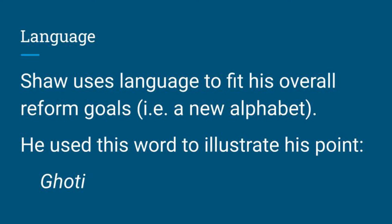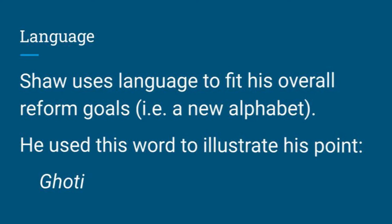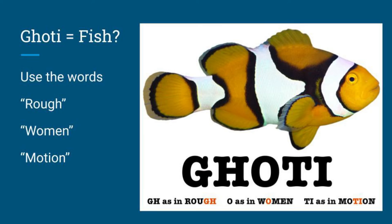Nothing better illustrates — this is a famous trick from Shaw — but nothing better illustrates his point with language than this word down here: G-H-O-T-I. Anyone got an idea how to say that? How about fish? Using the G-H from 'rough,' the O from 'women,' and the T-I from 'motion,' you can get fish. Shaw's using this to show just how complex and difficult English pronunciation is, and how it simply should not be that way, but actually be simplified down so that people can use it better.